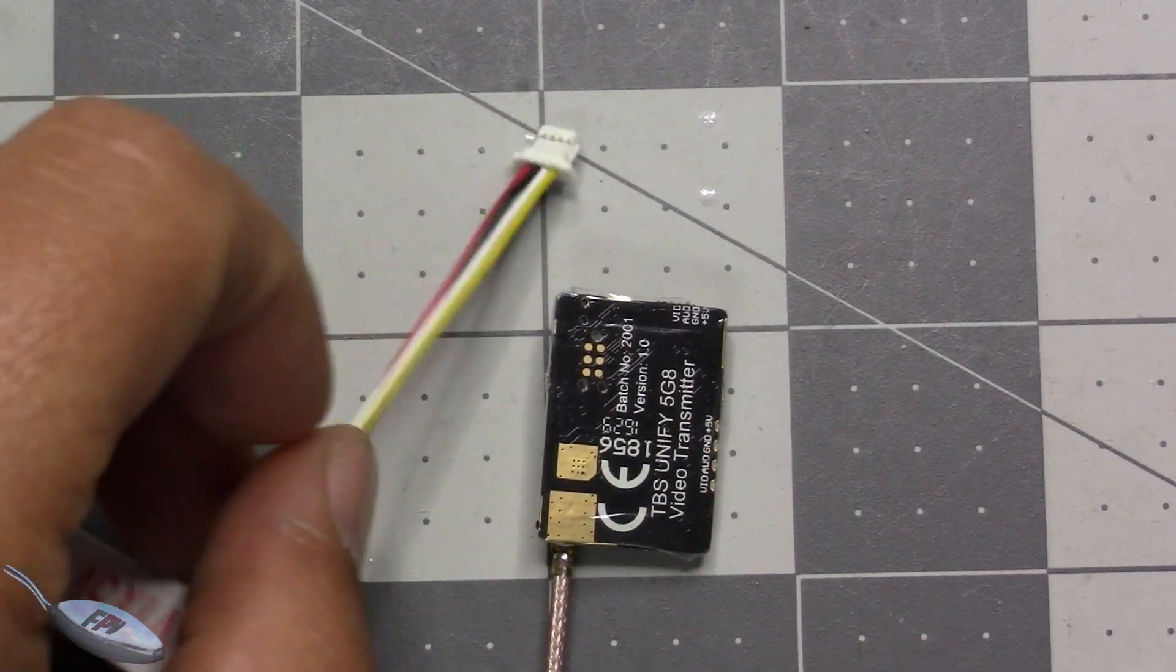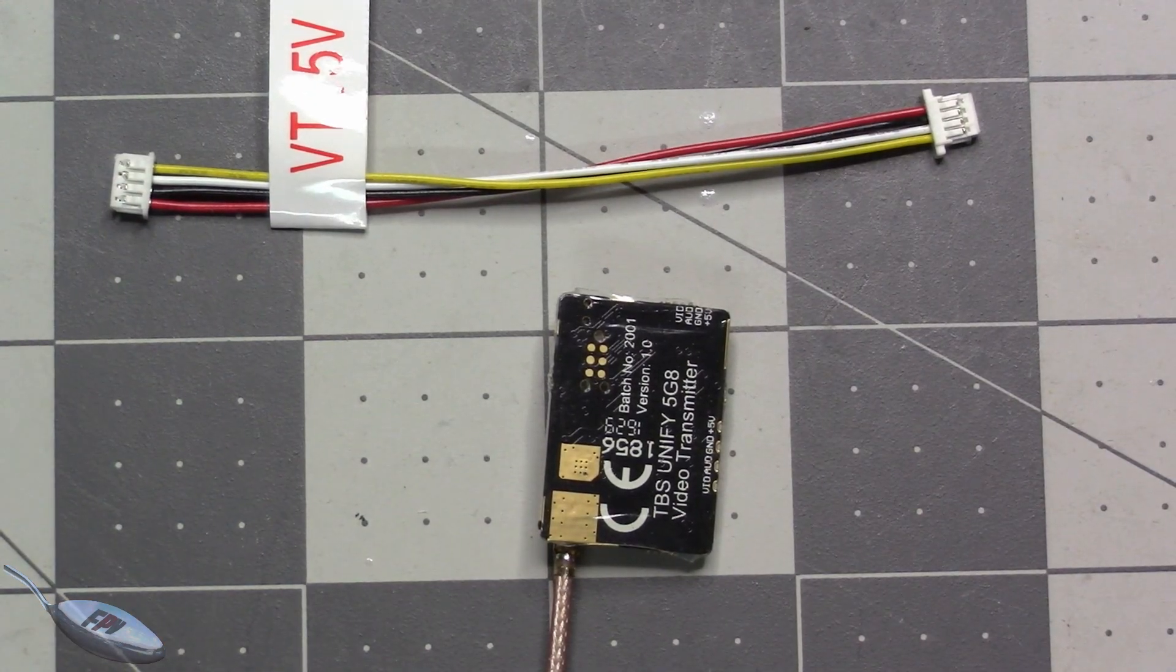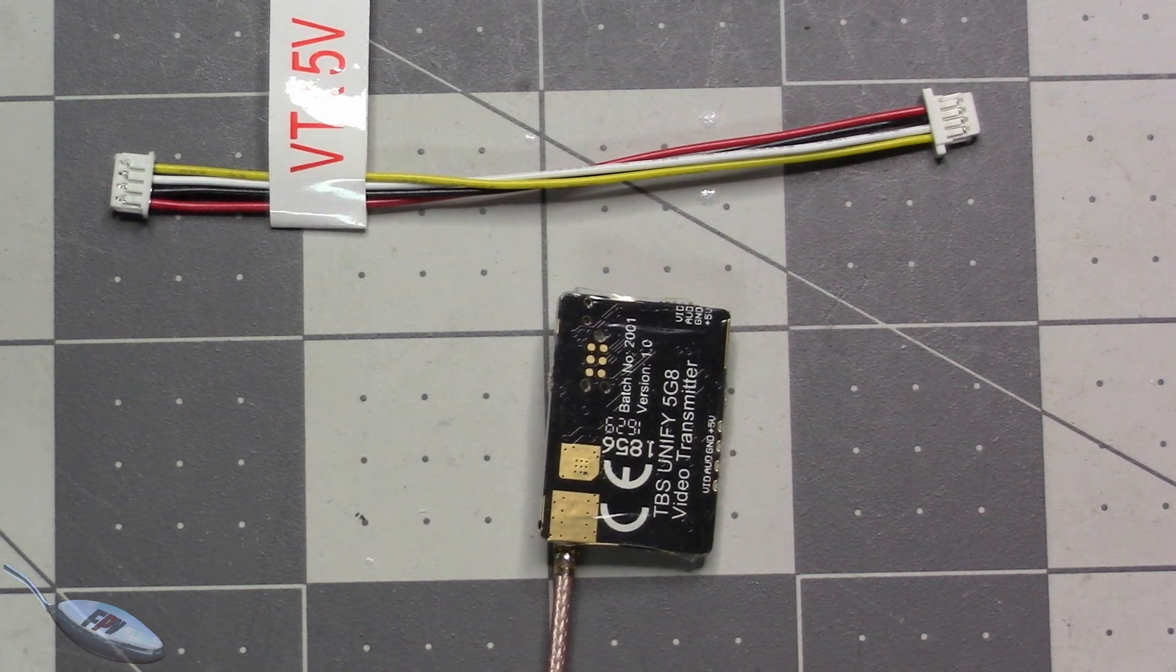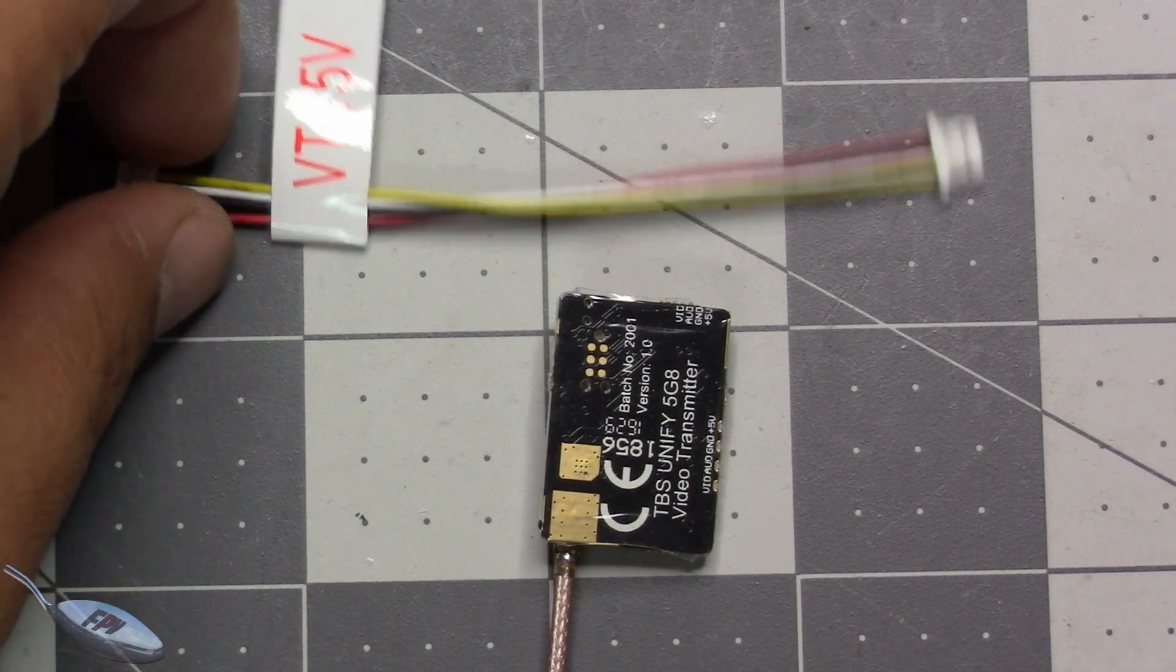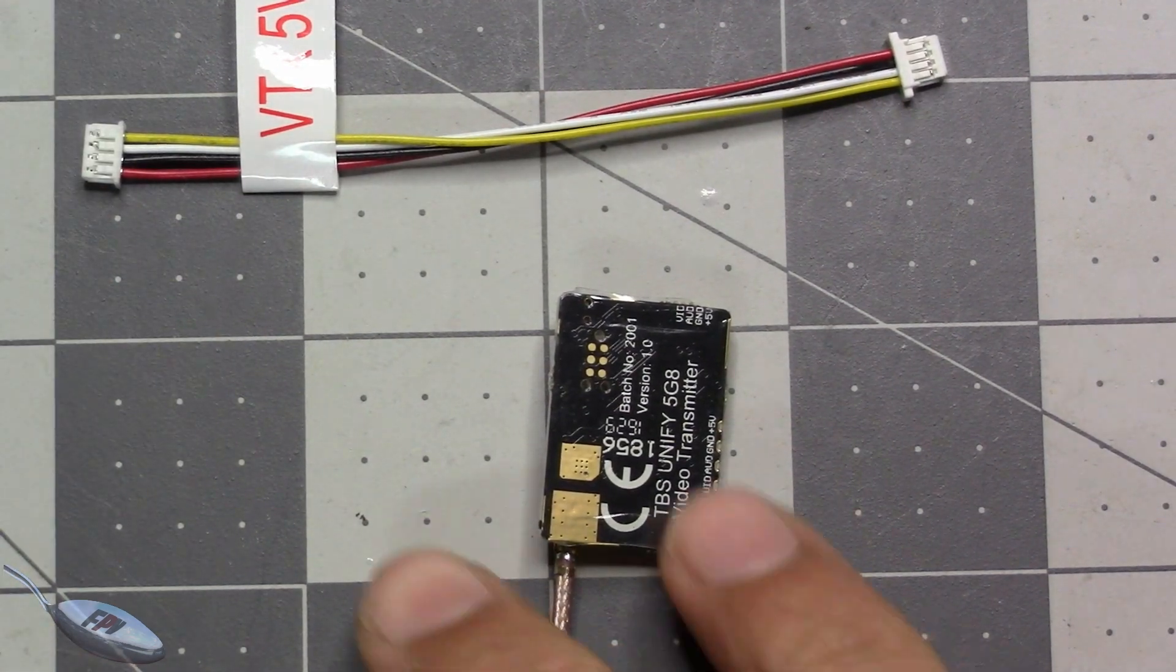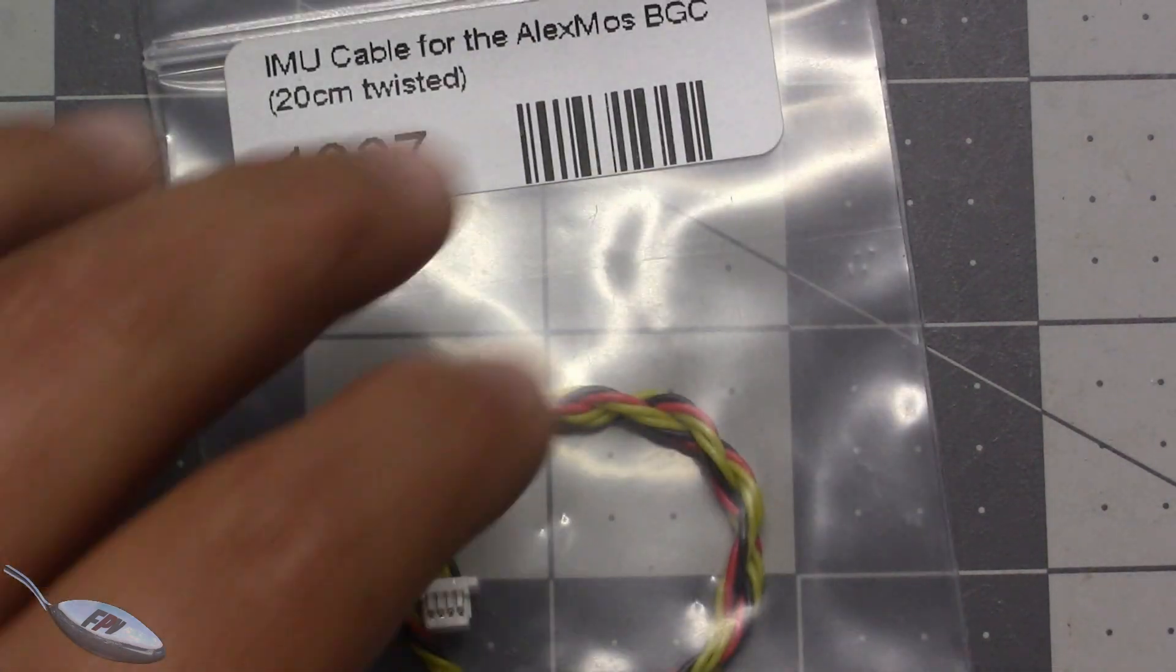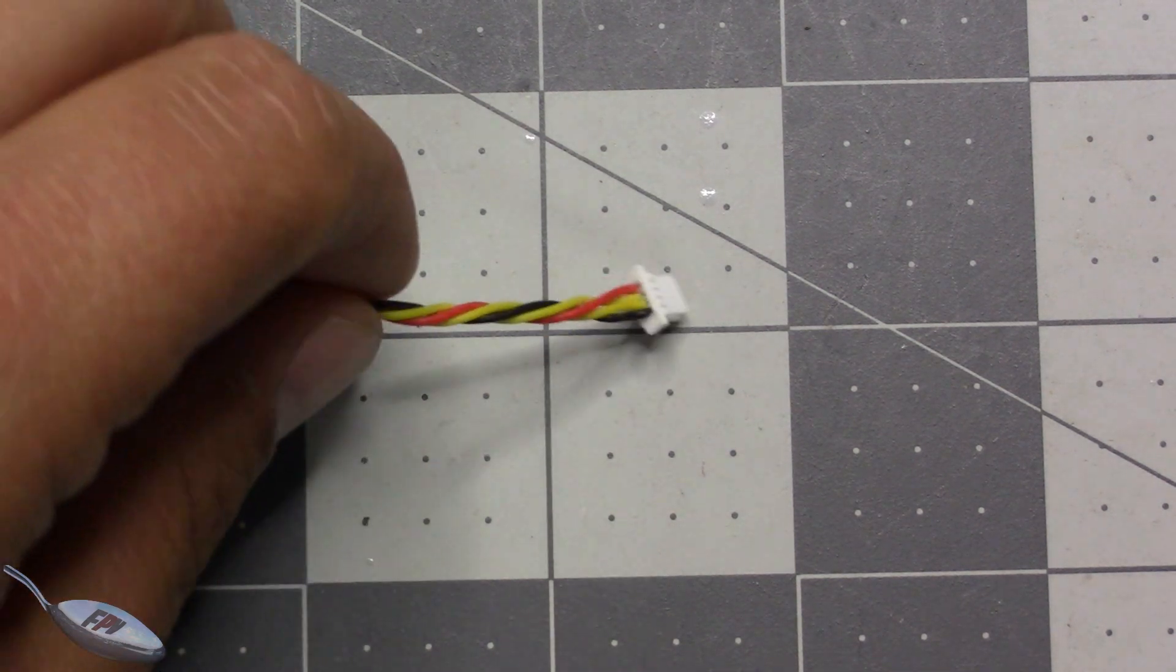So this is the cable that comes with the Unify, the TBS Unify V2. And I basically destroyed most of mine and I couldn't find replacements for them. What I wanted to do was show you, I finally did find a replacement for it and it is this part from GetFPV and I'll put a link in the description. But basically, before you do it, the pinout is wrong on this.